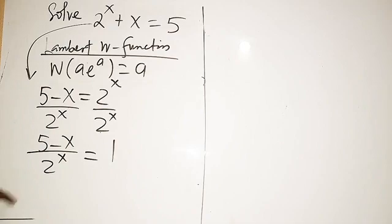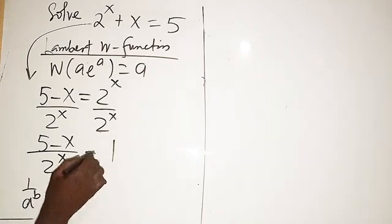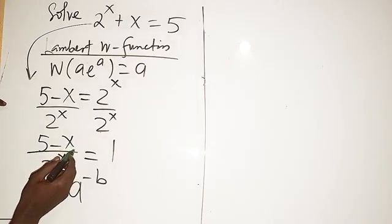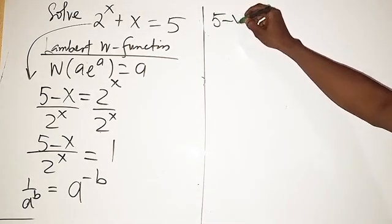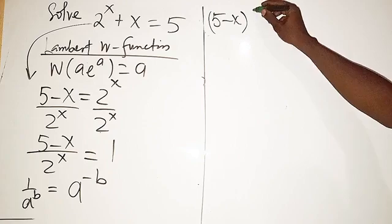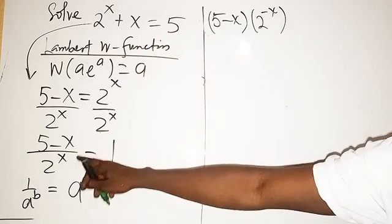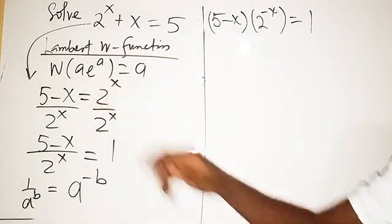We want to relate this to the Lambert W function. Remember from the law of indices: 1 over a raised to power b gives us a to the power minus b. So here, (5 minus x) over 2 to the power x can be written as (5 minus x) times 2 to the power minus x, which equals 1.